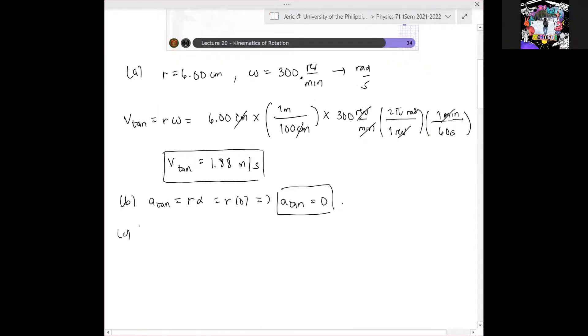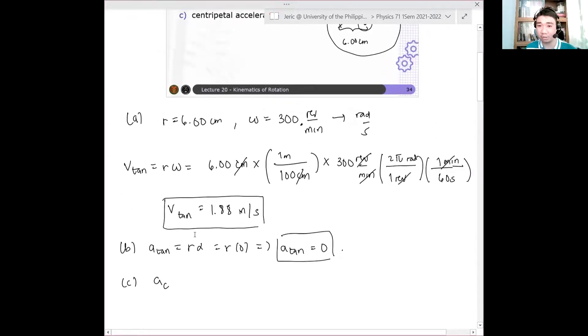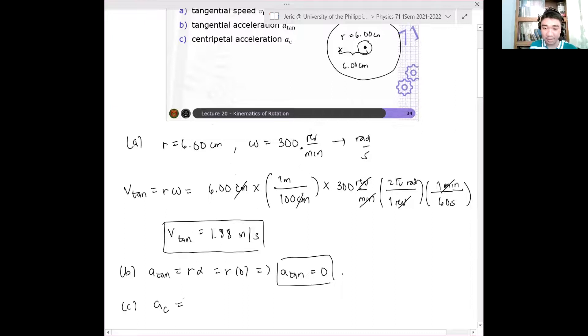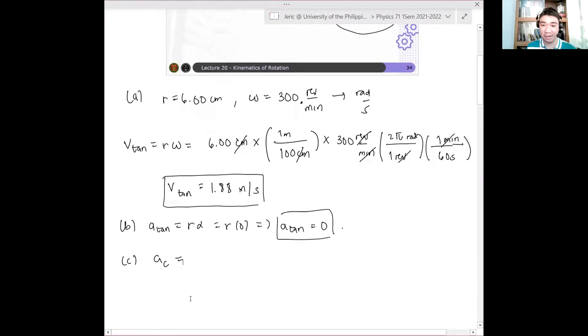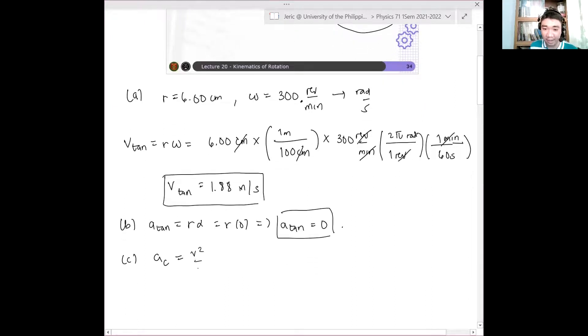Now letter C. If tangential acceleration is zero, is radial acceleration automatically zero too? No, sir. Because you still have tangential velocity. So what about the centripetal acceleration or radial acceleration? So this is simply equal to what? This is v squared over r, right? If you forgot the formula, this is just r omega squared over r. So this is simply omega squared r. So you substitute our omega.